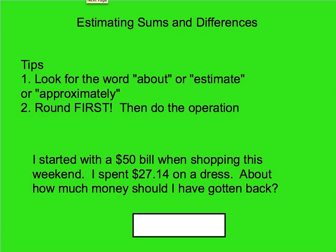This last problem I want you to try along with me. Get out a whiteboard so you can follow along and do the rounding yourself. The steps: look for those keywords, and after you've found them, round first and then do the operation second. Notice this is the same problem with one small difference: I started with a $50 bill, I spent $27.14 on a dress — about how much money should I have gotten back? If you recognize the difference as the word 'about,' you'd be absolutely correct. One word makes a huge difference in this case.